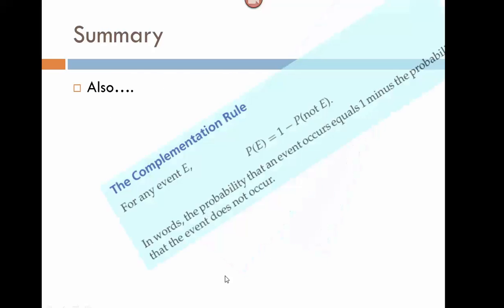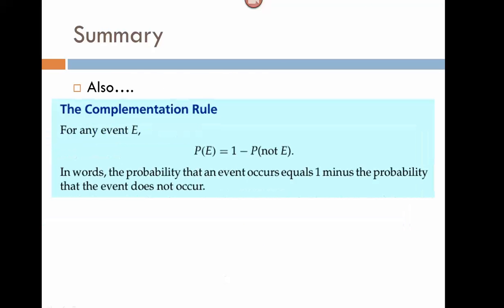We also looked at the complement rule, which said that any event can actually be found by finding the probability of its complement and then subtracting that probability from 1. In other words, the probability of any event is 1 minus the probability that our event does not occur.